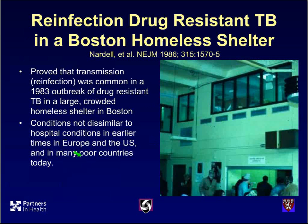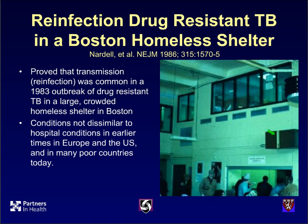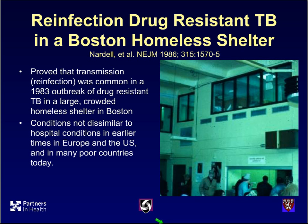My own involvement with buildings and tuberculosis began in the early 1980s. Depicted here is a homeless shelter in Boston where many homeless men, some alcoholic, gather on cold winter nights, where tuberculosis would spread from person to person. In the lobby you see ultraviolet fixtures suspended from the wall or ceiling designed to disinfect the air. We determined in this outbreak that not only were people being infected, but they were being reinfected with tuberculosis — conditions that resemble what's going on in hospitals around the world today and in many other residential settings.